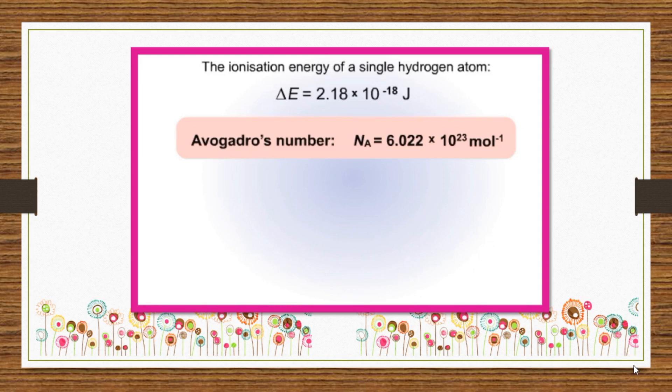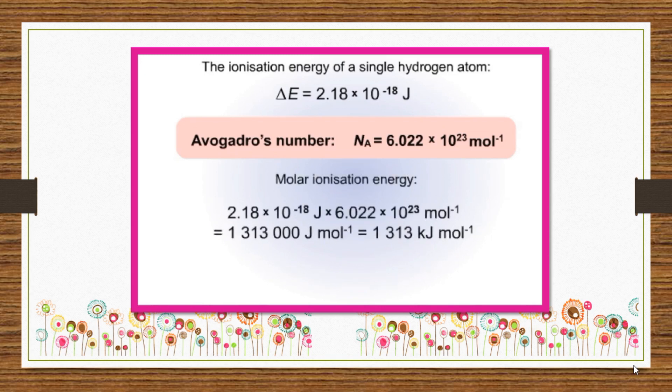This means that one mole of hydrogen contains 6.022 times 10 to the power of 23 molecules, since hydrogen exists as molecules, H2. Therefore, the ionization energy of hydrogen expressed in joules per mole is. This theoretical value corresponds very well with hydrogen's ionization energy determined experimentally, which is 1312 kilojoules per mole.